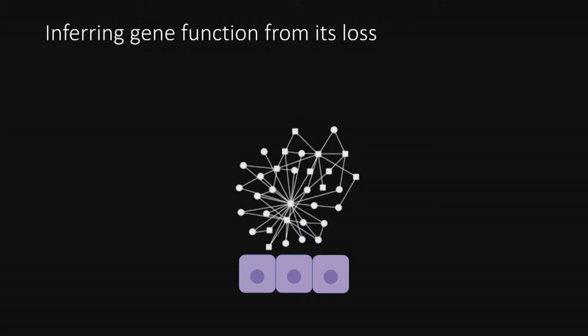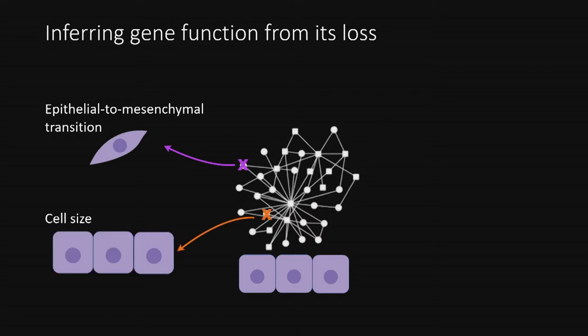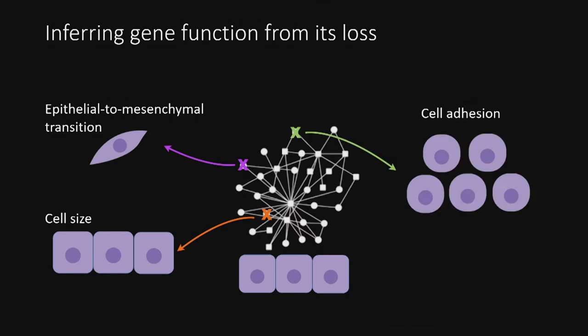One powerful way to learn about gene function is based on genetic screens — by inducing gene loss and observing how cells change after losing the gene. For example, if we knock down a gene and the cells become more spindle-shaped, we can infer the gene has a role in epithelial to mesenchymal transition. If the cells become larger, we can infer a role in cell size. Or if gene knockdown affects cell-to-cell contacts, we can infer that the gene regulates cell adhesion.